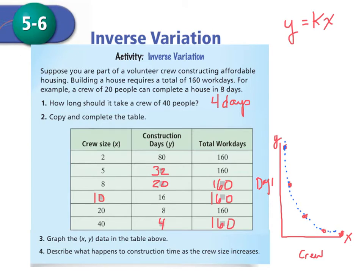Describe what happens to the construction time as the crew size increases. I want you to do this on your own. What happens with the construction time as the crew increases? It goes down. So you would write construction time decreases. Because obviously if you have more people working on the job, your number of days is going to actually be less.